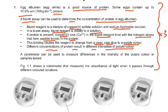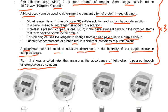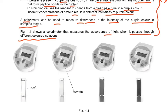A colorimeter — not a calorimeter — spelled C-O-L-O-R — measures the color. This is actually mentioned in the syllabus. A colorimeter can be used to measure differences in the intensity of the purple color in samples tested. Figure 1.1 shows a colorimeter that measures the absorbance of light when it passes through different colored solutions. The cuvettes are tubes with different shades of purple, and you can see readings such as 0.0, 0.04, 0.13, and 1.44.